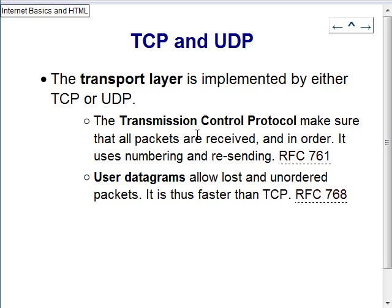The receiver keeps asking the sender to resend anything it didn't get. UDP doesn't do that — it just breaks the message into packets, sends them, and it's done. UDP can be faster than TCP but things can get lost. UDP is used often in streaming applications — streaming video or audio — where if you miss a frame, you just show the next one. Small losses don't matter; you just want to get as much data through as possible. That's when you use UDP.